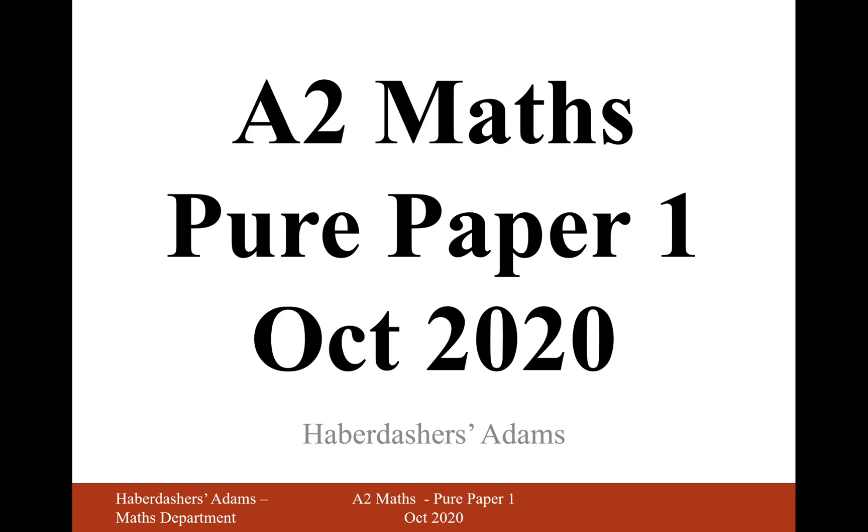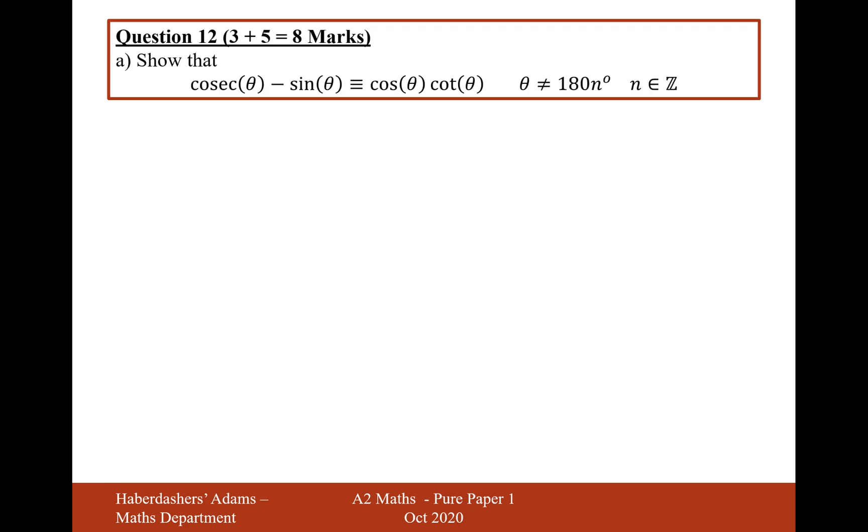Hello there, welcome to the October 2020 paper. We're looking at question 12. So part A is prove the trigonometric identity that cosec theta minus sine theta is identical to cos theta cot theta.